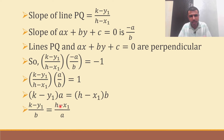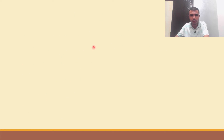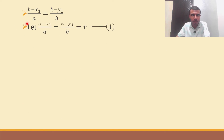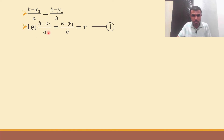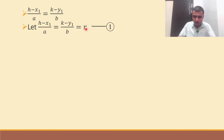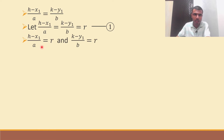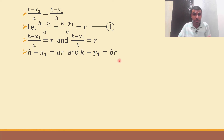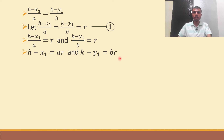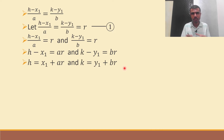So h minus x1 by a equals k minus y1 by b. Let this ratio be R — mark it as equation 1, I'm going to need it later. Taking two separate parts: h minus x1 by a is R, and k minus y1 by b is R. Sending a and b across: h minus x1 is AR and k minus y1 is BR. So H equals x1 plus AR and K equals y1 plus BR.